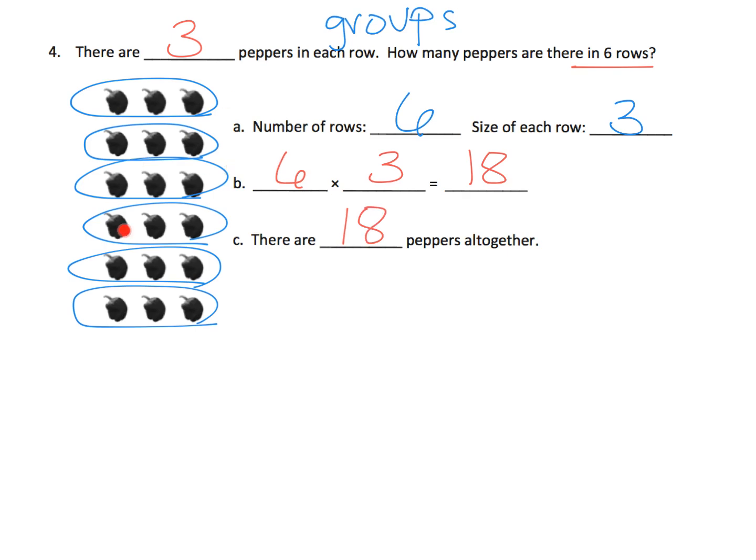This is another great opportunity for students to begin the practice of learning how to skip count, and they can do that through whispering. You could do 1, 2, 3 — 4, 5, 6 — 7, 8, 9 — 10, 11, 12. That's how you can begin helping students learn how to skip count their threes.